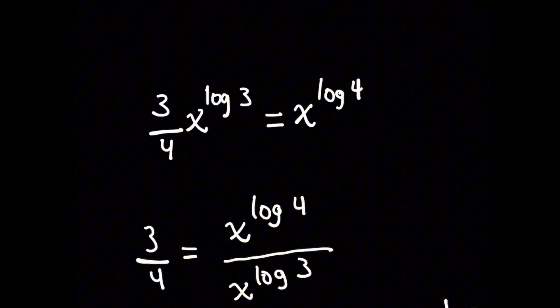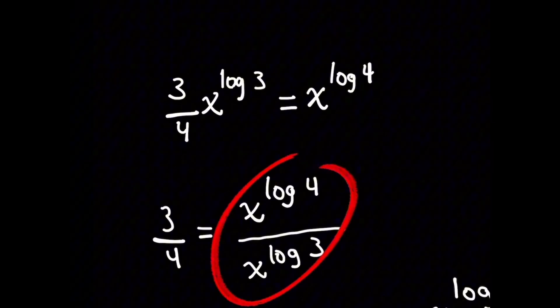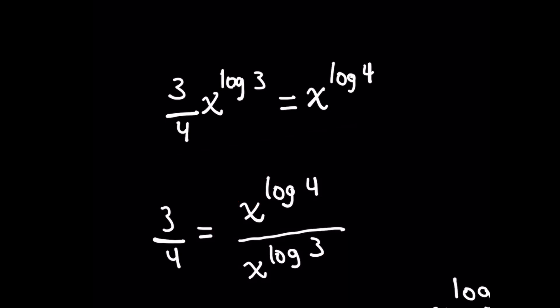And now the next logical step for me to separate out the x on one side is basically dividing both sides by x raised to the log of 3.